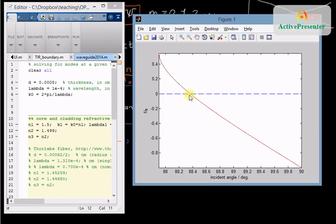It's possible to create conditions by having very close refractive indices to have only one possible guided mode in the waveguide.